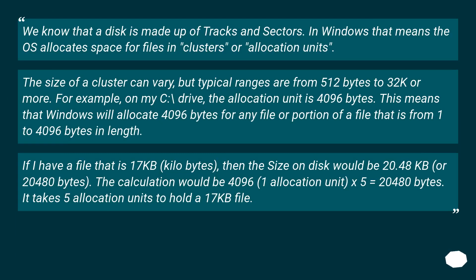A disk is made up of tracks and sectors. In Windows, that means the OS allocates space for files in clusters or allocation units. The size of a cluster can vary, but typical ranges are from 512 bytes to 32K or more. For example, on my C:\ drive, the allocation unit is 4096 bytes.